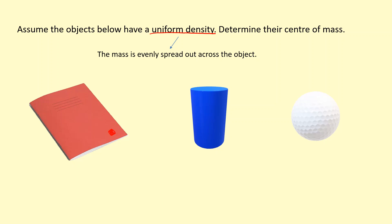If I want to find the central mass for each of these objects, what I would do is draw lines of symmetry. If I draw a line of symmetry through the center of the book like this, I know that half of the mass will be on this side and the other half on this side. Then I can draw another line of symmetry.